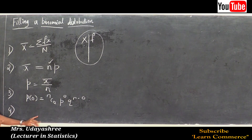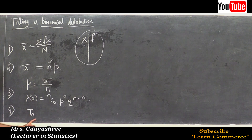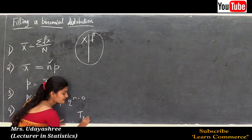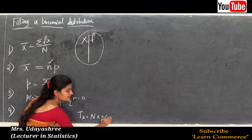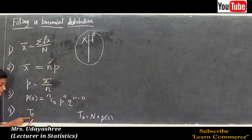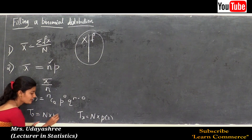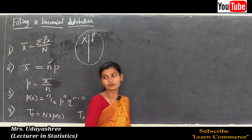Step 4 is to find the first term of the theoretical frequency distribution, that is t0. The formula is: tx = N · P(x), so the first term is: t0 = N · P(0).